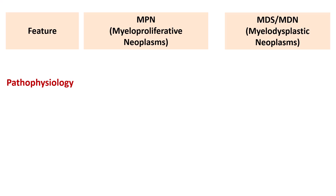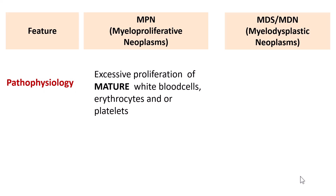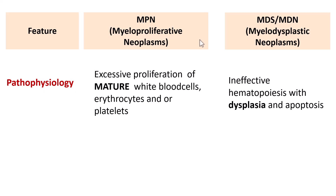Myeloproliferative Neoplasms, as the name says, are proliferative — there is excessive proliferation of mature cells, which could be mature white blood cells, mature erythrocytes, and/or mature platelets. Myelodysplastic Neoplasms, on the other hand, involve ineffective hematopoiesis — they are clonal stem cell disorders which result in dysplasia and apoptosis. Remember, there should be no dysplasia in Myeloproliferative Neoplasms, as all their cells are mature.